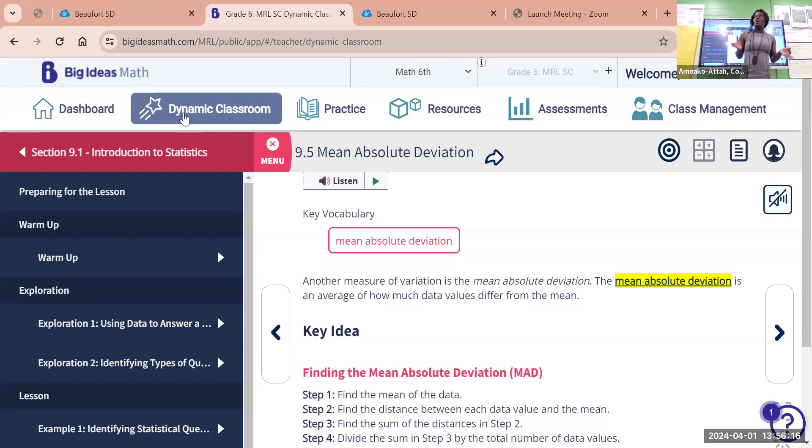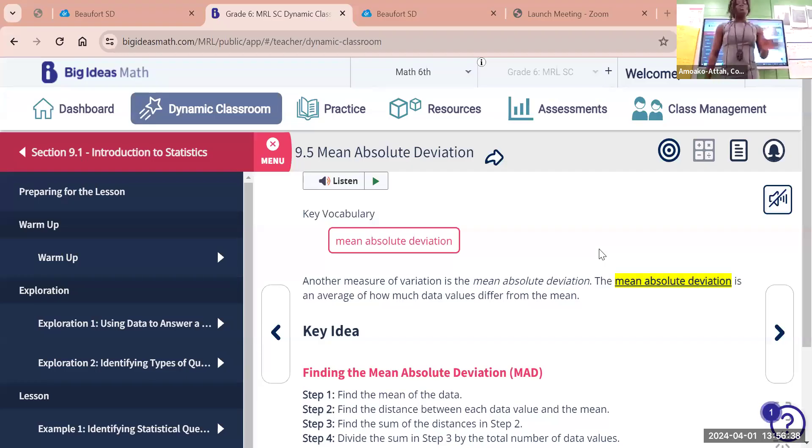So now let's quickly look at, I've already talked about the measures of center. That is the mean, the median, and the mode. We've already gone through that. So I'm also taking you through the mean, median, and mode. And of course, the range, we've seen all these words. I've also taken you through the quartiles, the lower quartile, the upper quartile, and the interquartile.